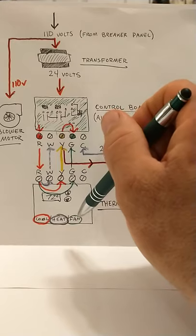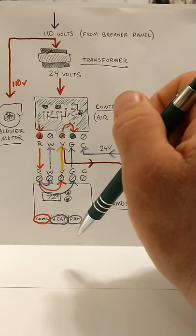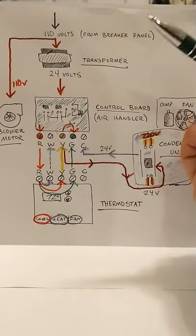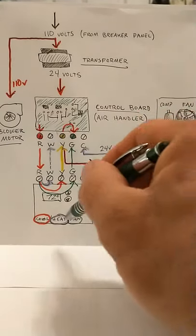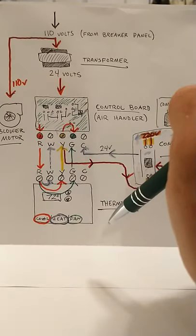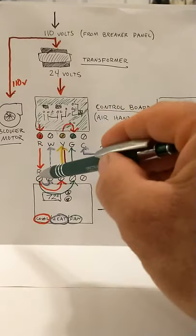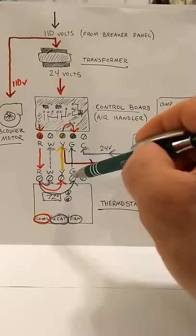Sometimes a homeowner will want to run just the fan just to circulate the air through the house. They don't want to run the heating or cooling, just circulate air. So when you turn the thermostat to the fan-only mode, it will close the circuit between the R terminal and the G terminal.